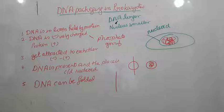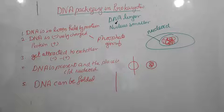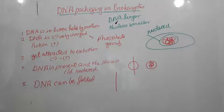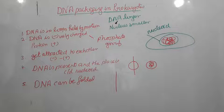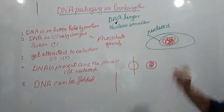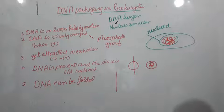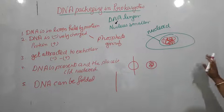So now you know that DNA is arranged in loops held by protein. DNA is negatively charged whereas protein is positively charged, and DNA is negative because of the phosphate group. They are attracted to each other and that is why they are closely and tightly packed. The region where DNA is present is called the nucleoid, and DNA in the nucleoid is organized as large loops held by protein — that is how DNA gets adjusted in the nucleus.